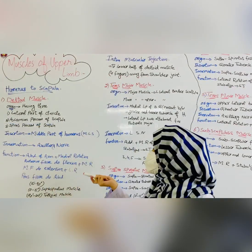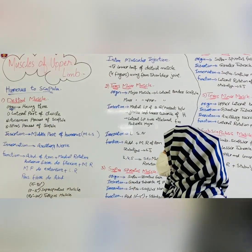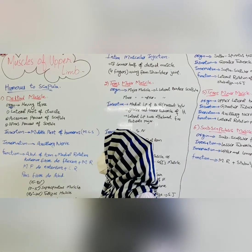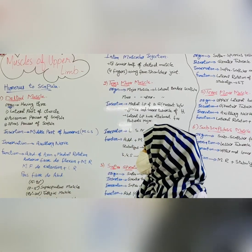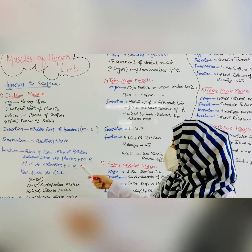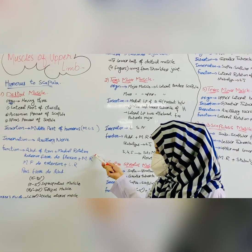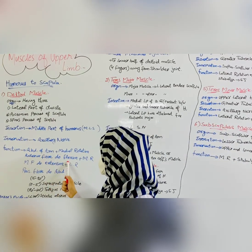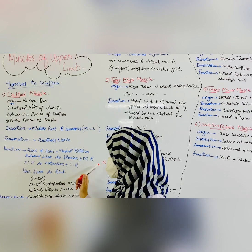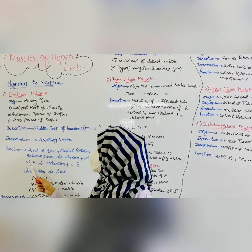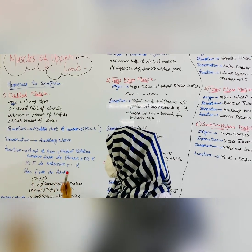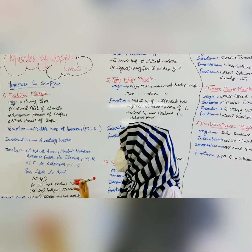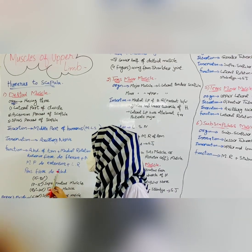The function of the deltoid muscle is abduction of the arm, meaning movement of the arm away from the body, and medial rotation. The anterior fibers of the deltoid muscle perform flexion and medial rotation. The medial fibers perform extension and lateral rotation, and the posterior fibers perform abduction.